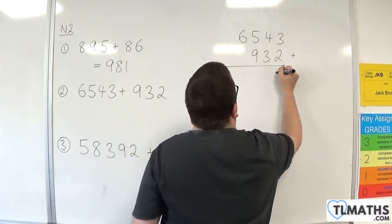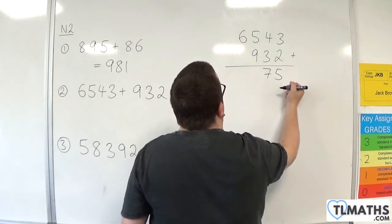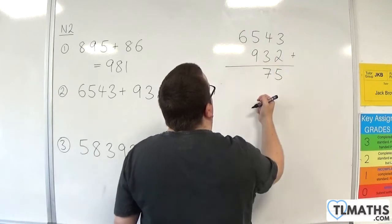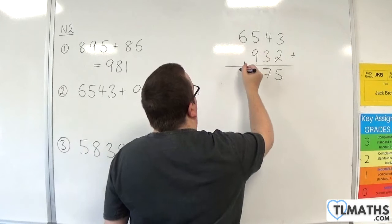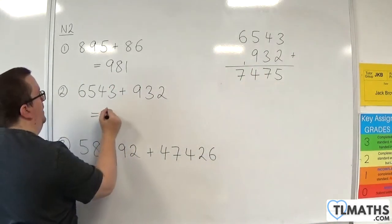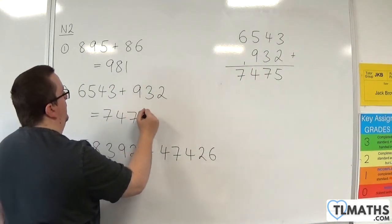3 plus 2 is 5. 4 plus 3 is 7. 5 plus 9 is 14, so put down the 4, carry the 1. 6 plus 1 is 7. So we have 7,475.